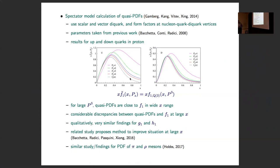They did not only study F1, but also the helicity and transversity distributions with similar qualitative findings. There is a related study in which Barbara was involved with basically the same type of findings — particular issues at large x. They also propose a method to improve the simulation at large x using a combination of quasi-PDFs and information on moments.